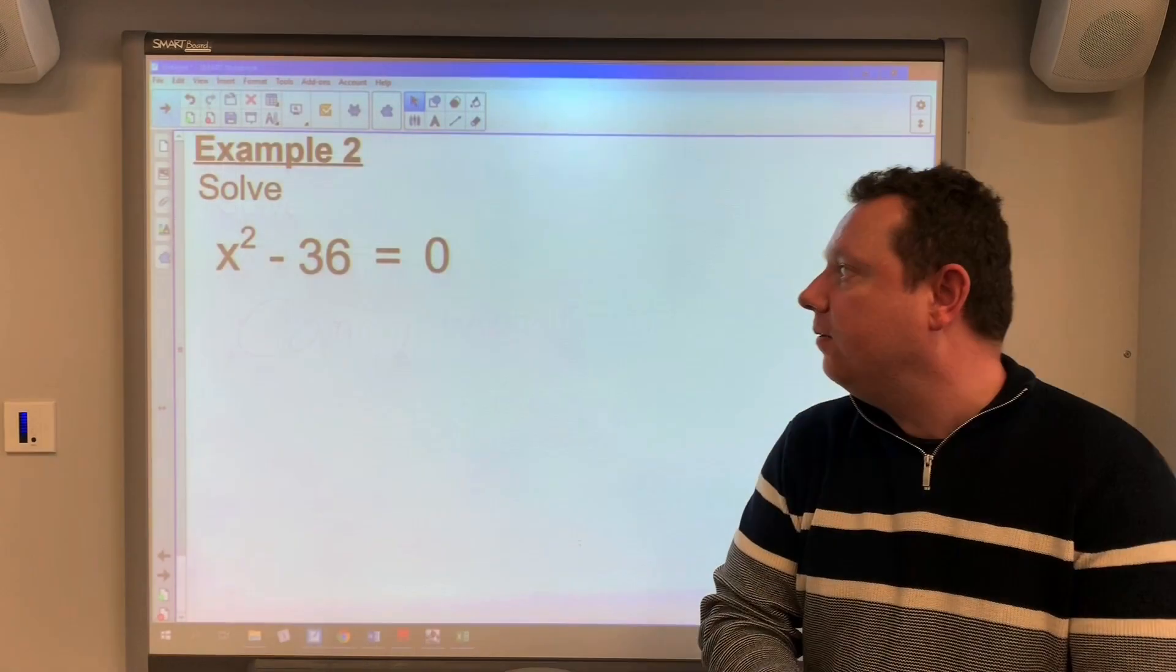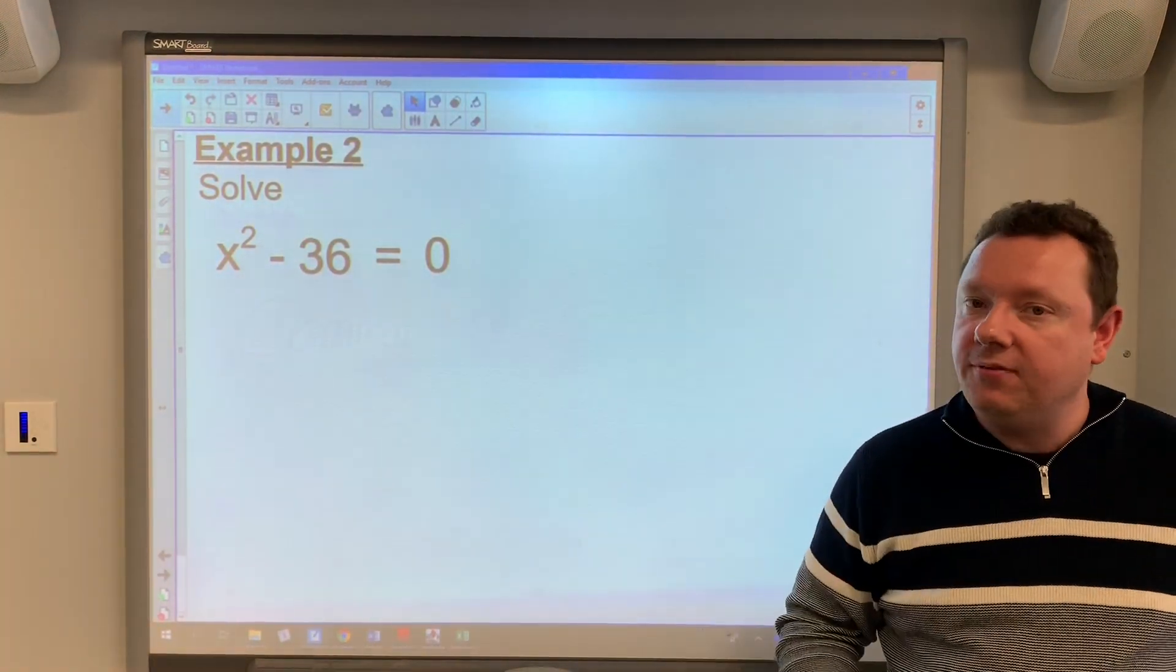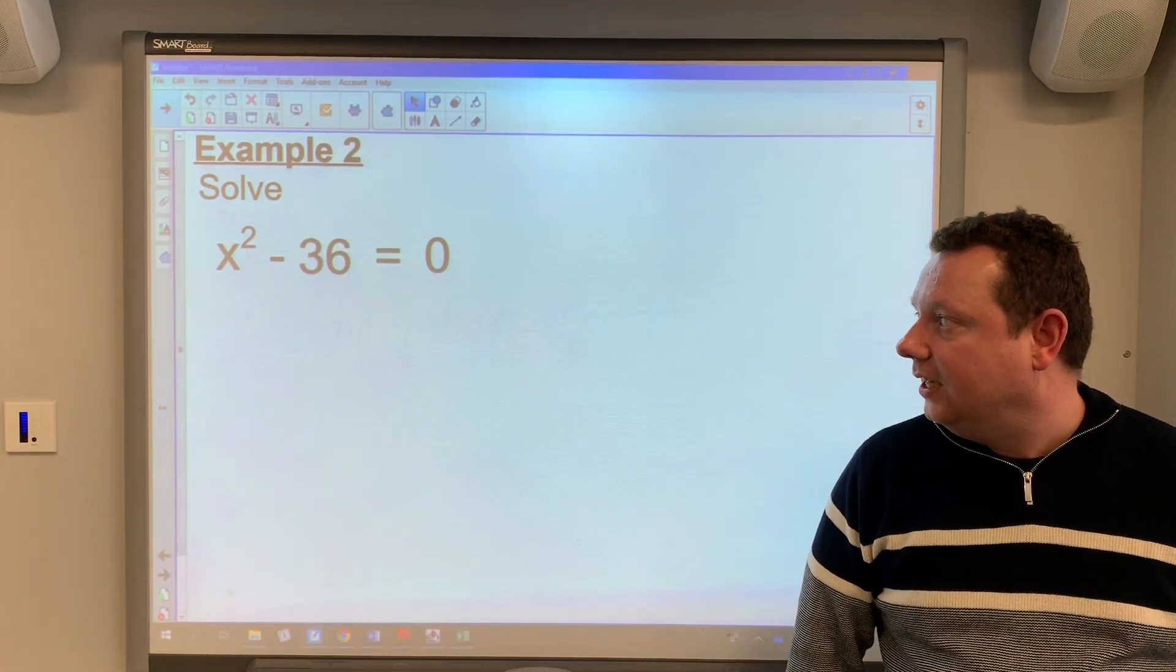You can type, but we can try and solve. Again, I've got a quadratic because I know it's got an x squared. So it's definitely a quadratic and it says x² - 36 = 0.